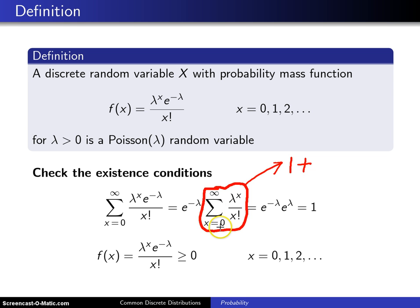Then when x equals 1, you get lambda to the 1st divided by 1 factorial. Plus when x equals 2, you get lambda squared divided by 2 factorial, and this pattern continues.